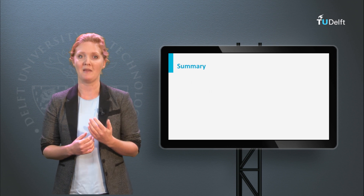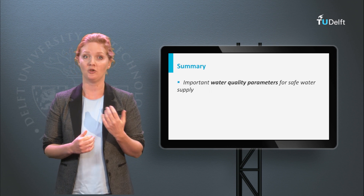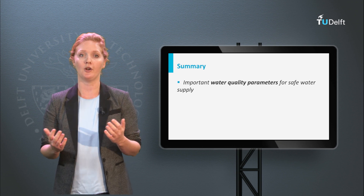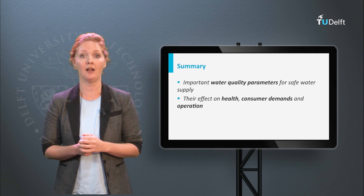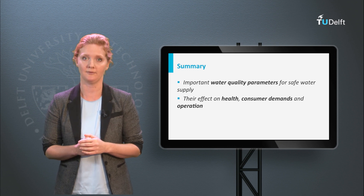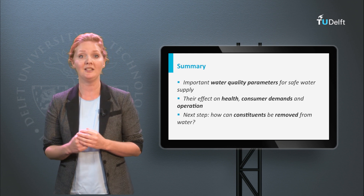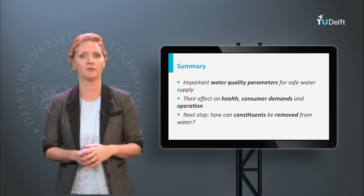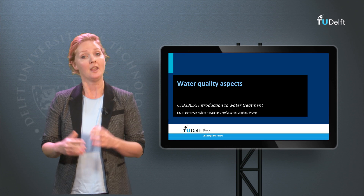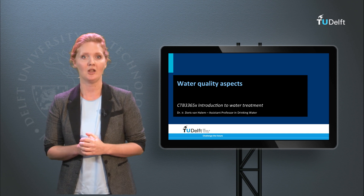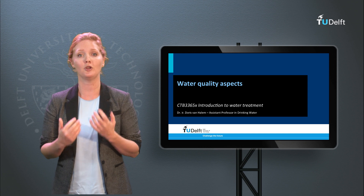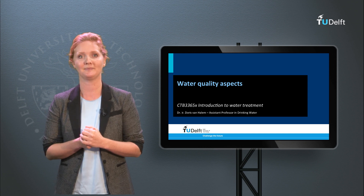Now you know the main water quality parameters that you need to pay attention to when designing a water treatment plant. You have also learned about their effect on human health, consumer demands and operation. The next step will be to learn more about how you can remove these constituents from the water. We have come to the end of this lecture, so I want to thank you for watching. Please use the discussion board for your questions. Thank you.